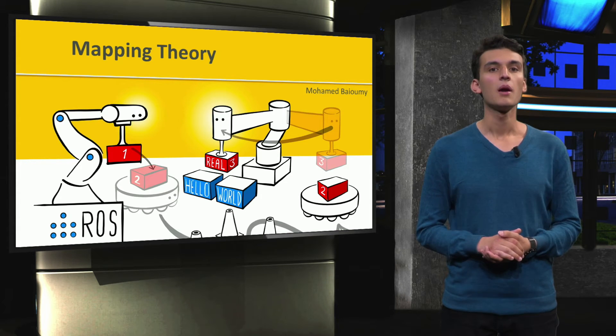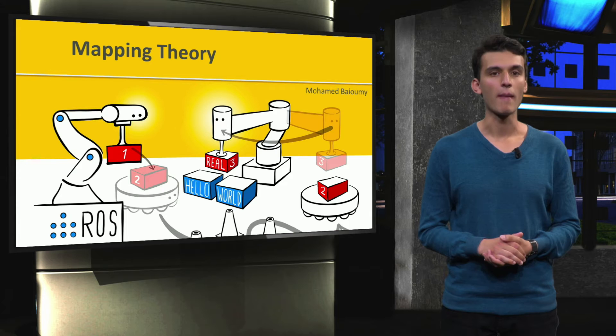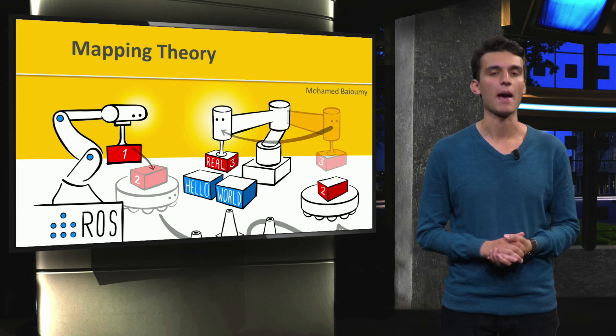We will start off with mapping. Before we dive deep into how to do mapping with our robot using ROS, we will look at some theory to help you understand what's happening.